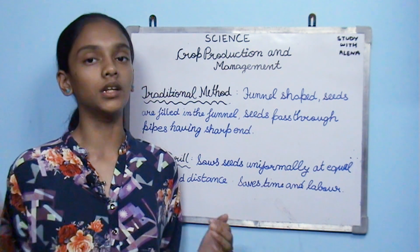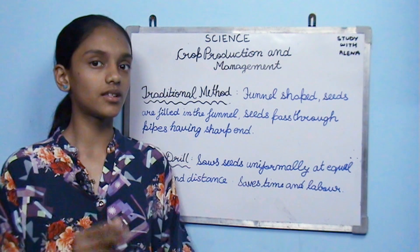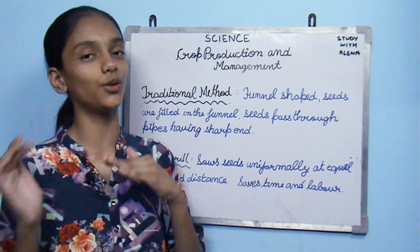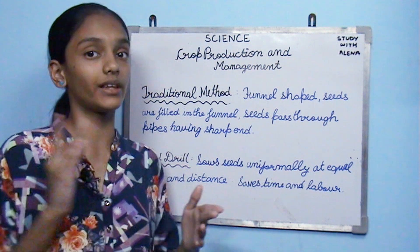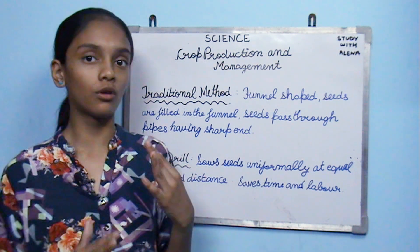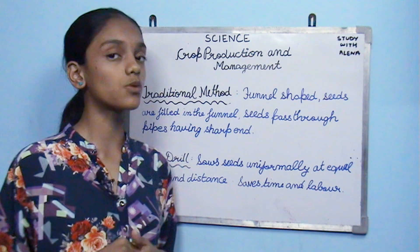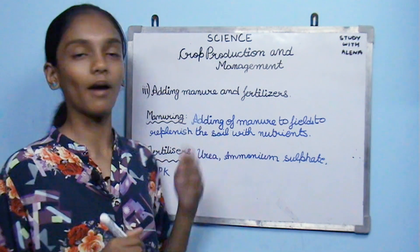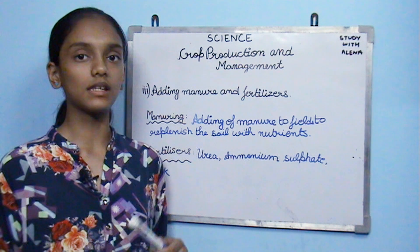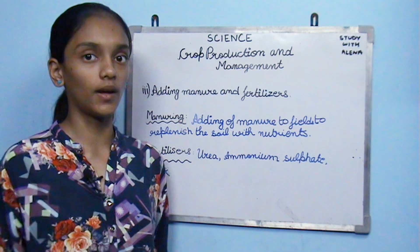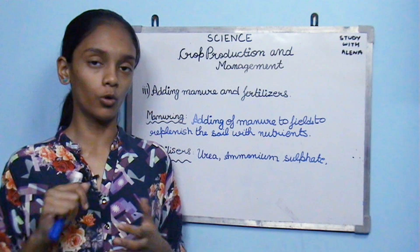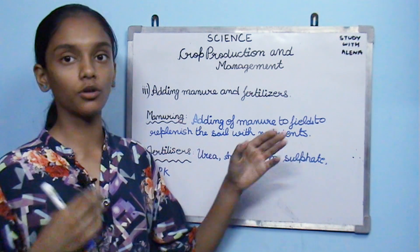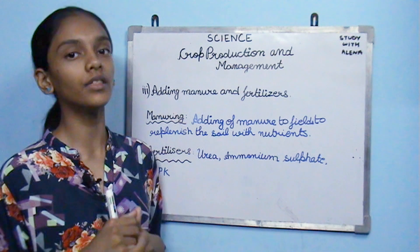In transplantation, seeds are first grown in nurseries in small pots. When the seed turns into a seedling or small sapling, it is shifted to the field. This allows us to select the best plants and exclude those that did not grow well. The next step after sowing is adding manures and fertilizers, which is done to replenish the soil with nutrients it lacks or needs more of.